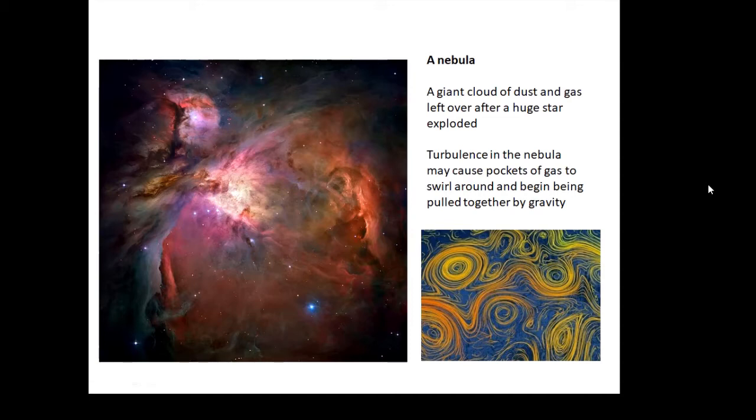So basically the dust and gas that formed our solar system used to be part of a much, much bigger star. And what happens is that turbulence in the nebula causes pockets of gas to swirl around, eddy currents.